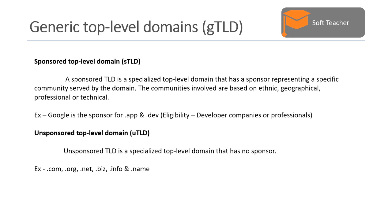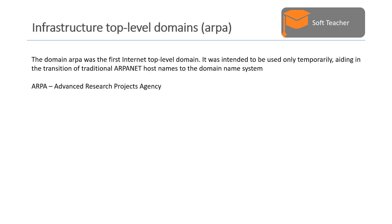The second one is unsponsored top level domain. An unsponsored TLD is a specialized top level domain that has no sponsor. For example, .com, .org, .net, .biz, .info, and .name.